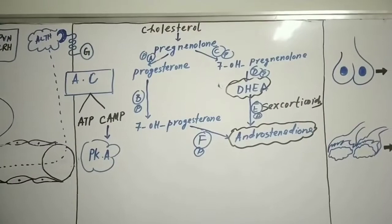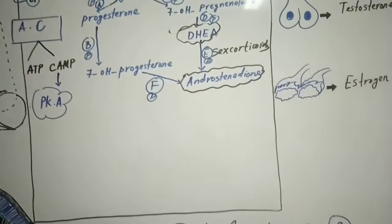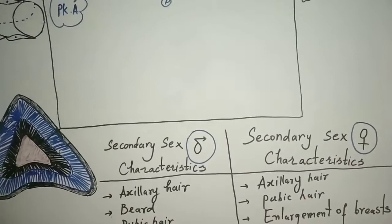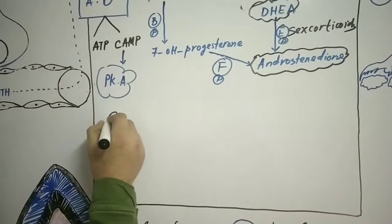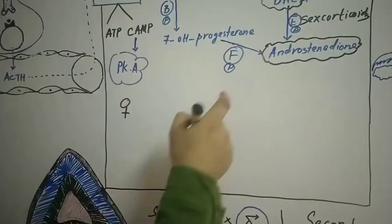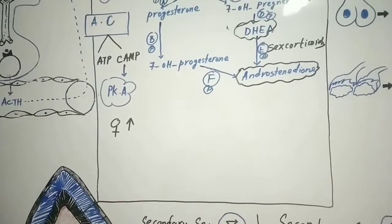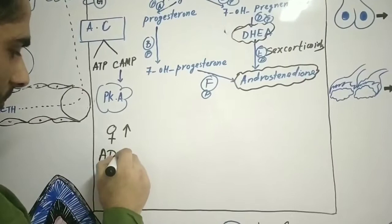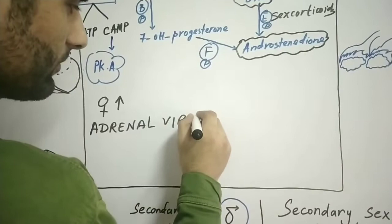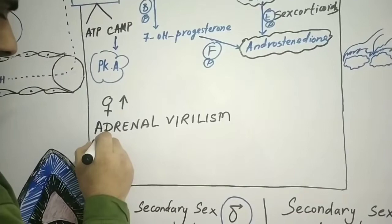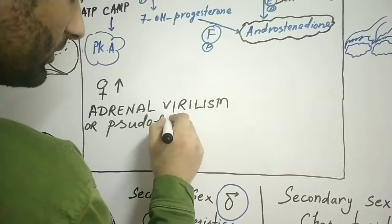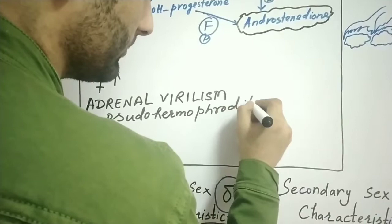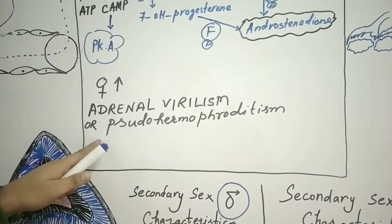Now we will see the hypersecretion of sex corticoids in males and females. If there is hypersecretion of sex corticoids in females, there is a disease known as adrenal virilism, also known as pseudo-hermaphroditism. In this condition, females develop male-like secondary sexual characteristics.